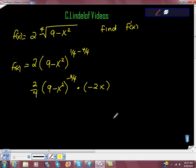Can this be simplified? Yeah, I'm going to multiply this piece times this piece and get negative 4/4, which is just negative 1. So it's negative x times 9 minus x squared to the negative 3/4.